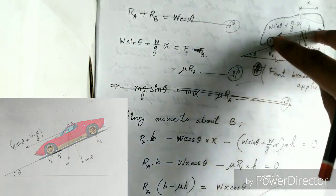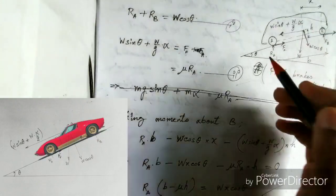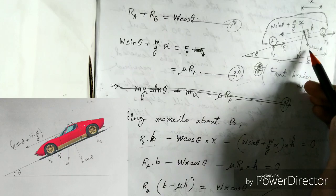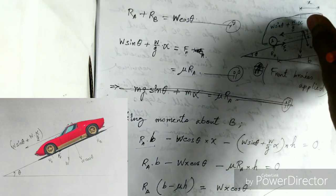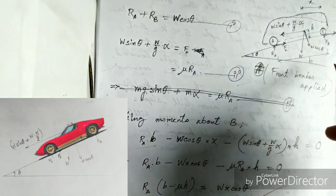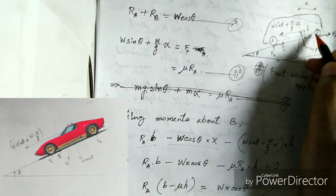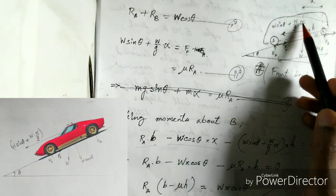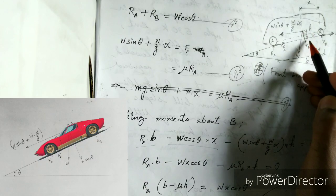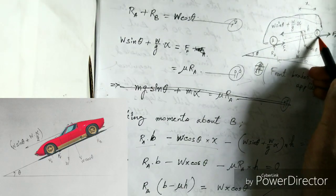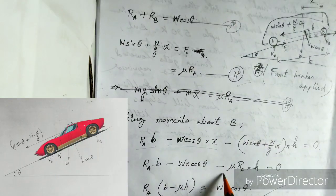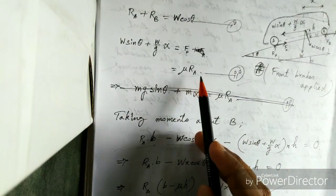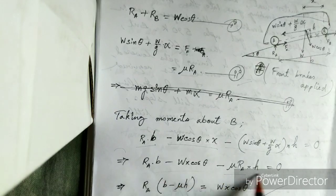When we take the moment about B, the first moment that tries to rotate or tilt the vehicle in the clockwise direction is RA into B, where B is the wheelbase. Then W cos theta tries to rotate the vehicle in the anticlockwise direction — that's why it's negative — and the distance is X. Then we have the moment from this force multiplied by the height of the CG, which also tries to rotate anticlockwise about point B. This is W sin theta plus W/G into alpha, which equals mu into RA from equation 2.